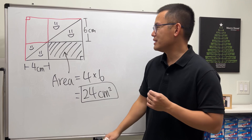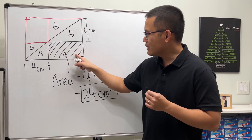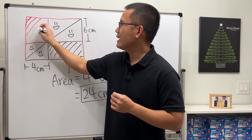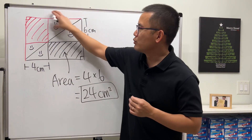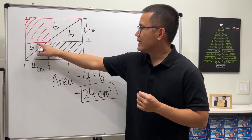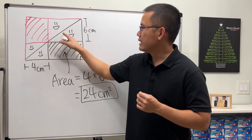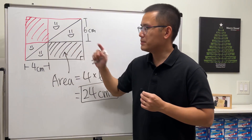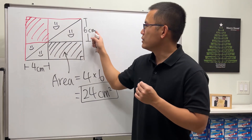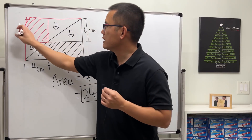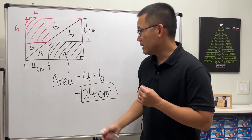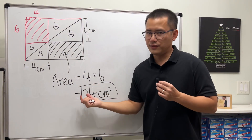Now finally, we can see that this area and that area must be equal, because the whole triangle equals the whole triangle — they are already equal — so this part must equal that part. Now, how do we find the area of that rectangle? We know this side is 6 centimeters and this side is 4 centimeters, that's why it's just 4 times 6.